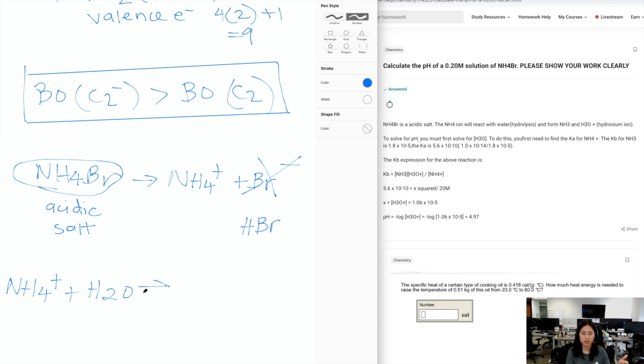So this is just your Bronsted-Lowry acid and base equation. So we have water, and then we have NH3, which is ammonia, which is the base. And then we have H3O+. How do I know it's H3O+? Well, this is your acid from this equation, and then this is your base, which is water. Now, what's your conjugate acid? Conjugate acid would be, so Ca is H3O+, and NH3 is your conjugate base.